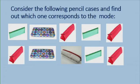Consider the following pencil cases and find out which one corresponds to the mode. So if we look at the different pictures, we can see that the red pencil case is the one which we find most often. We can see it four times, whereas the green one is seen only three times. So the mode will be the red pencil case.